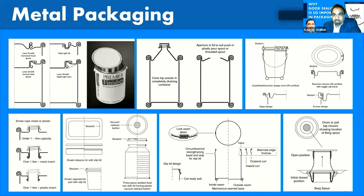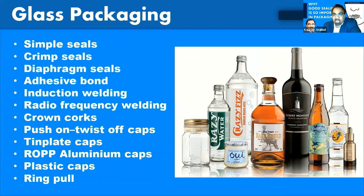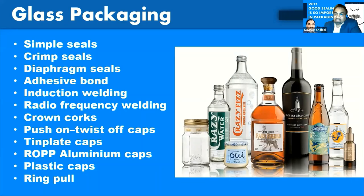When we talk about glass packaging, it has its own requirements in terms of variety of closing or sealing systems: simple seal, crimp, diaphragm, adhesive, induction welding, radio frequency, crown, push-on, twist-off cap, tin plate, ROPP (which is the most common), plastic cap, and ring pull. Each has its own requirements in terms of functionality and sealability with glass. We have to understand the details, requirements, and compatibility and then make the right selection.